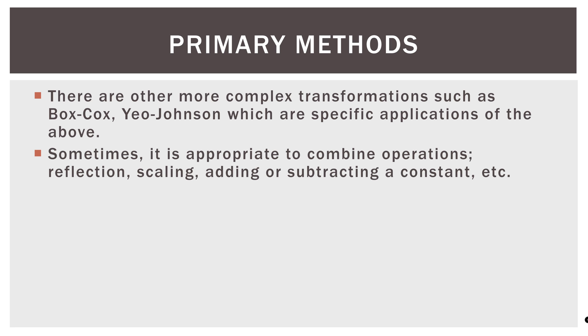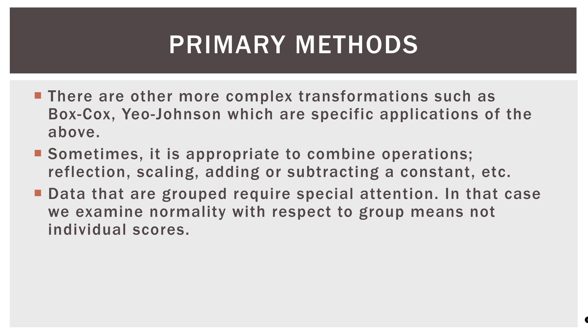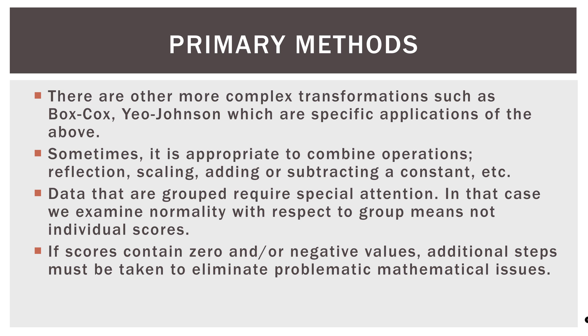Sometimes it is appropriate to combine operations. We'll talk about reflection, scaling, or adding or subtracting a constant at a later point. Data that are grouped require special attention — we examine normality with respect to group means, not individual scores. If scores contain zero and or negative values, additional steps must be taken. With the reciprocal function, one divided by zero is undefined, so we'll have to do something different. Negative values can also be problematic with logarithms, so we may need to perform additional operations to eliminate those mathematical issues.